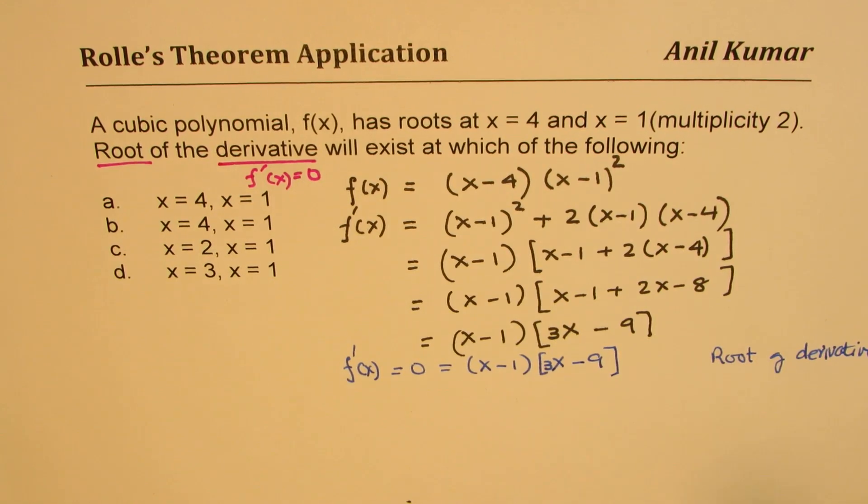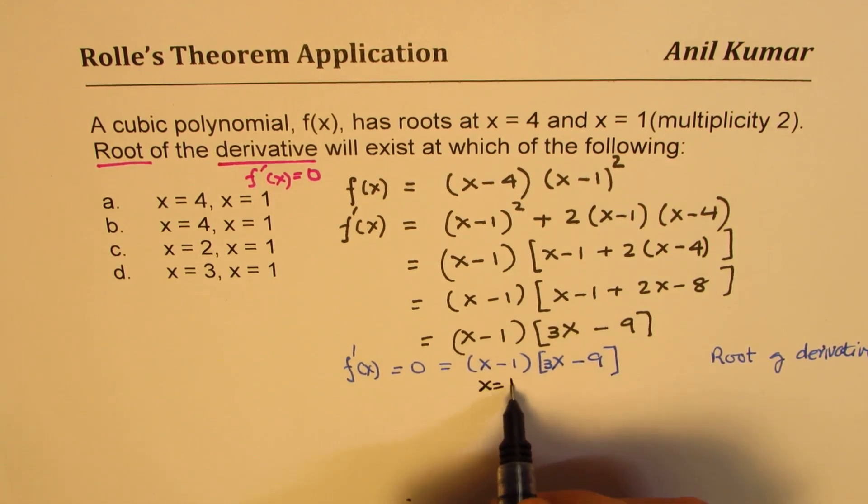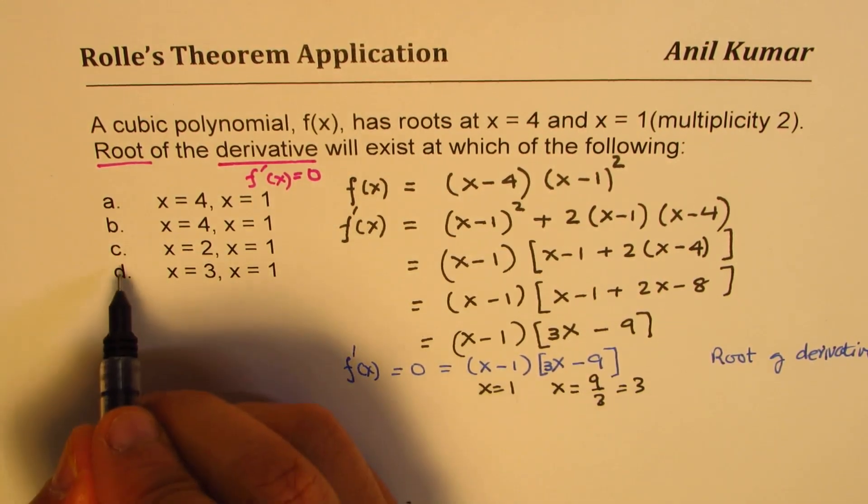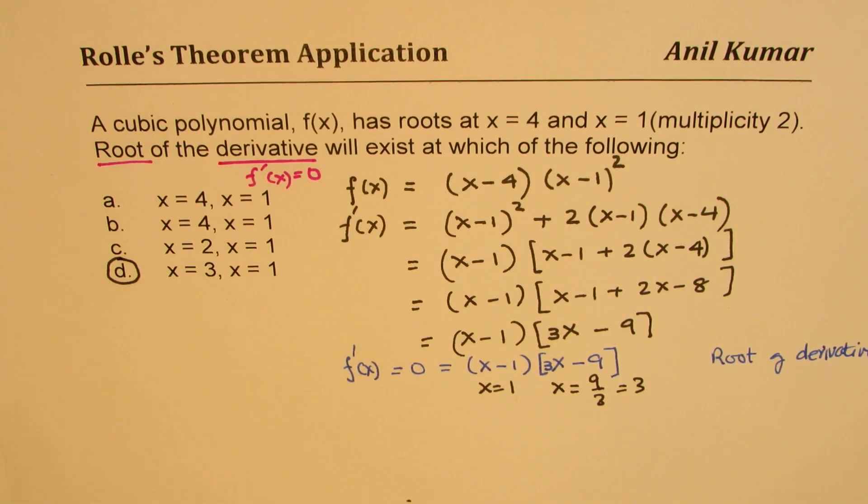So one of the root clearly is at x equals 1 and the other one is at x equals 9 over 3 which is 3. So the correct option is d for us. Is that clear?